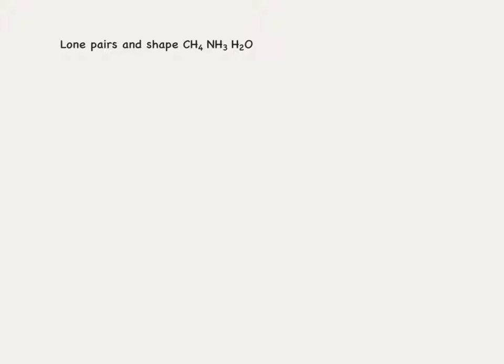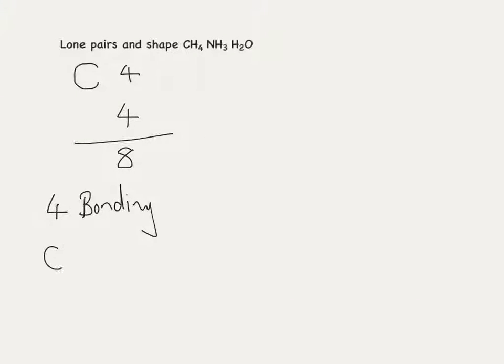Let's look at lone pairs and shape, using the examples of methane, ammonia, and water. Starting with methane, CH4: about the carbon atom we've got four electrons in the outer shell, and four bonds to hydrogen, which means we've got eight electrons in total. Divide by two gives us four pairs of electrons, of which we've got four bonding pairs and zero lone pairs of electrons.